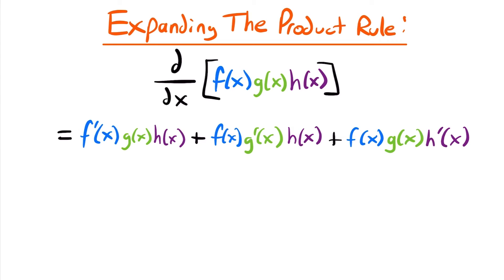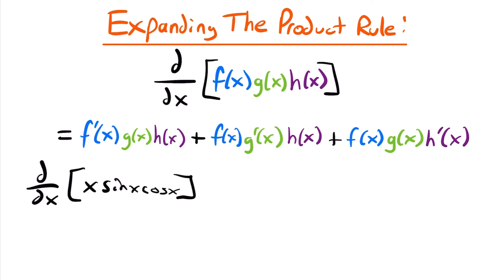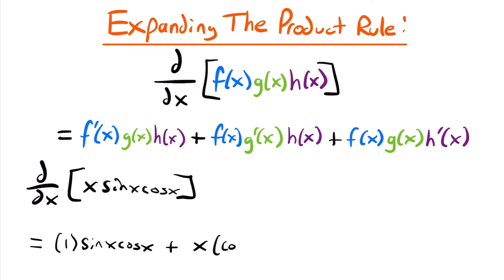Let's take a look at an example. For the derivative of x times sin x times cos x, we identify our three functions: f of x is x, g of x is sin x, and h of x is cos x. This equals the derivative of x, which is 1, times sin x times cos x, plus the original first function x times the derivative of sin x, which is cos x, times the original third function cos x.